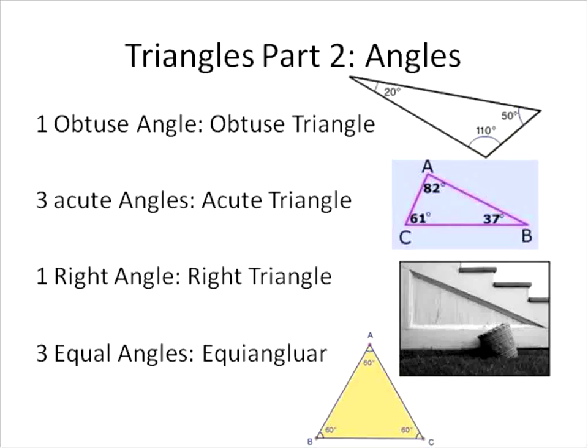Tri-angle, angle. There's an obtuse triangle. If there is one obtuse angle in the triangle, it's called an obtuse triangle. That's like this one up here. This one angle is 110 degrees. That means it's more than 90 degrees. So it's an obtuse angle. That's an obtuse triangle.